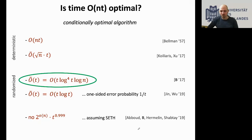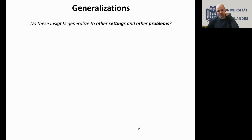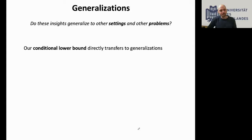Now subset sum is a special case of many other problems, so once we have lower bounds or faster algorithms for it, we should think about generalizations. The lower bound directly transfers to any more general problem like knapsack — at least it gives a lower bound, though not necessarily a tight one. The partition-and-convolution algorithm, however, doesn't directly generalize; for each problem we have to think carefully about whether this approach still applies.